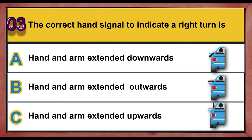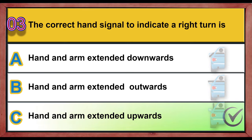Question 3. The correct hand signal to indicate a right turn is: A. Hand and arm extended downwards. B. Hand and arm extended outwards. C. Hand and arm extended upwards. Correct answer is C: Hand and arm extended upwards.